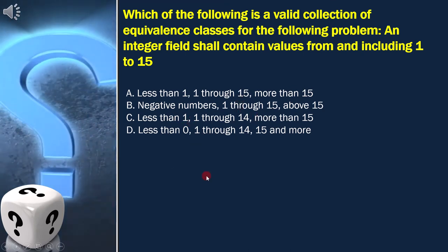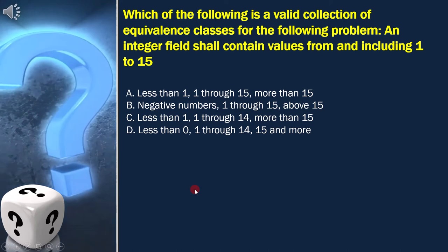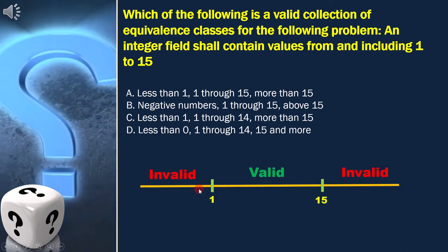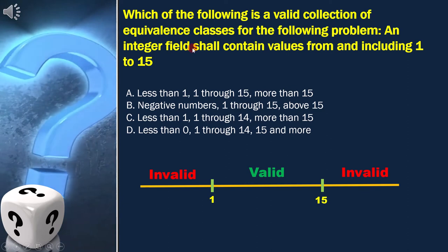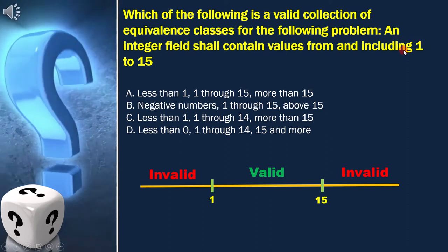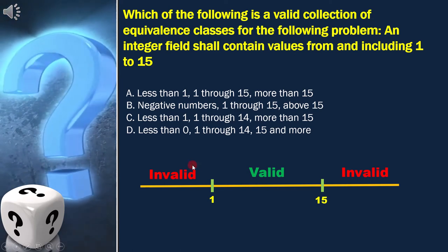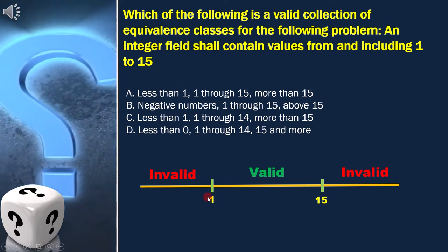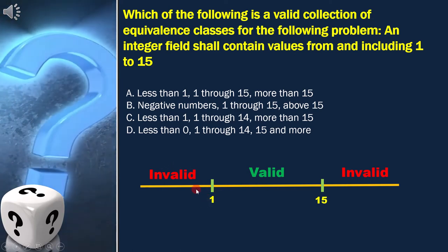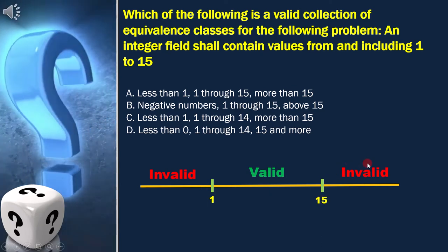Let's draw the equivalence classes diagram to get the answer. As per the question, an integer field shall contain values from and including 1 to 15, which means value less than 1 is invalid, and value greater than 15 is invalid.